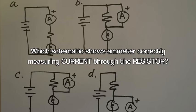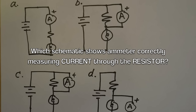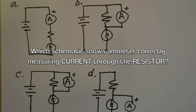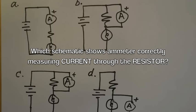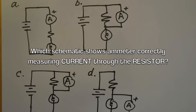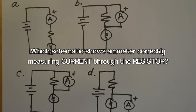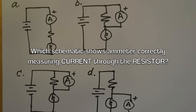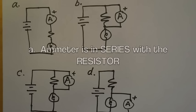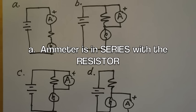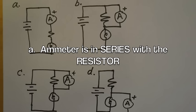Which schematic shows the ammeter correctly measuring current through the resistor? Look closely at the four diagrams. The answer is A. The ammeter is in series with the resistor.